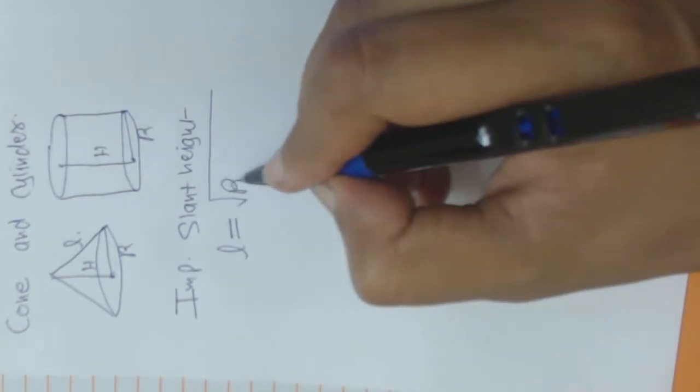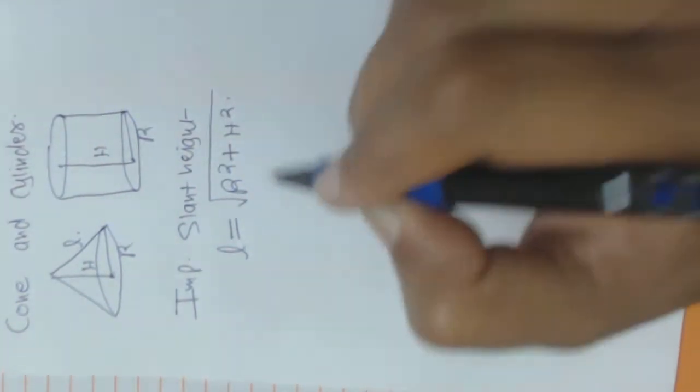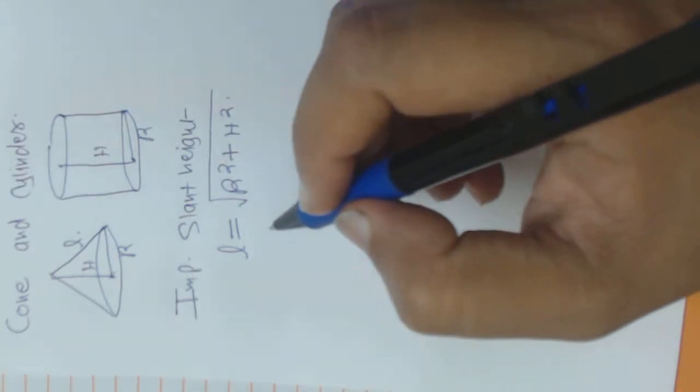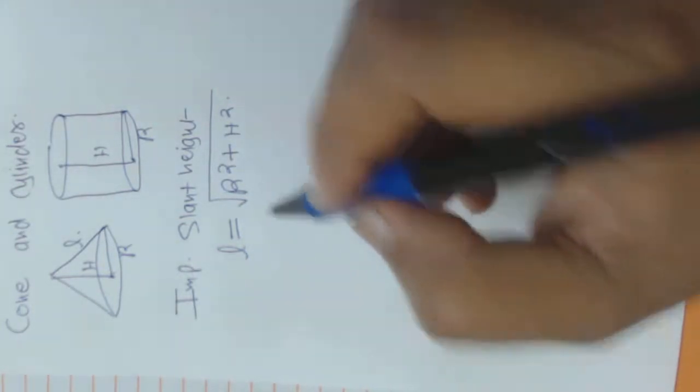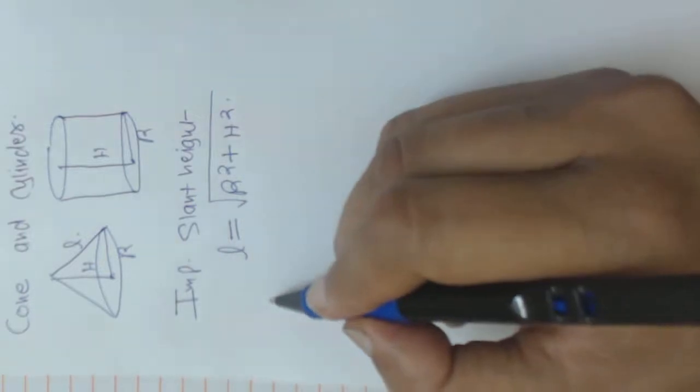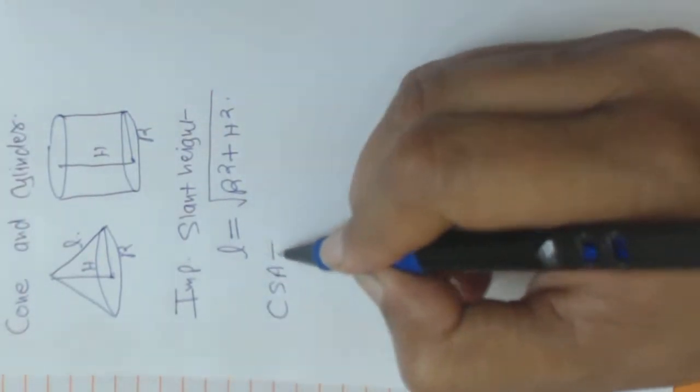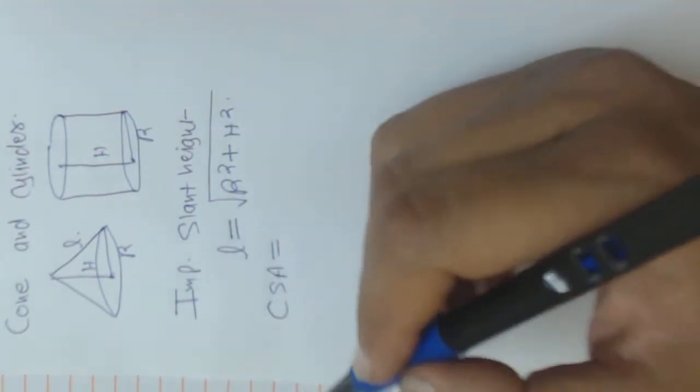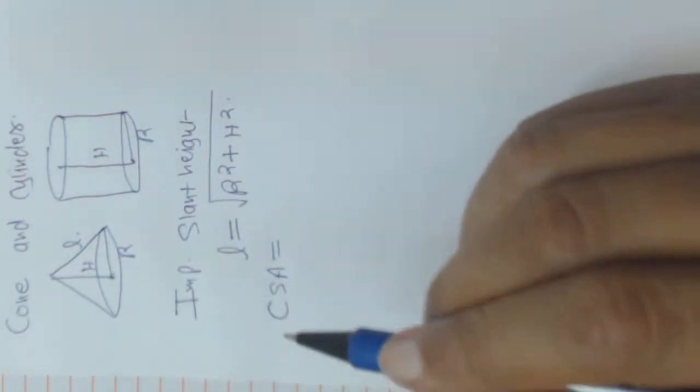This is slant height. Now from this, where we use the slant height in order to find the CSA of a cone, and where do we find out the CSA of a cone.